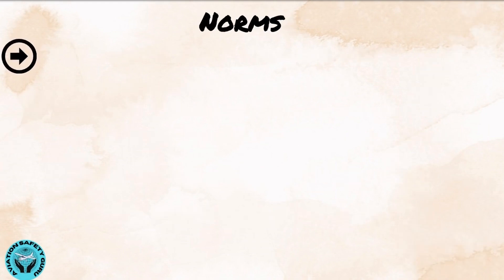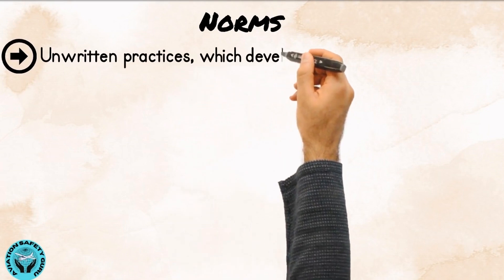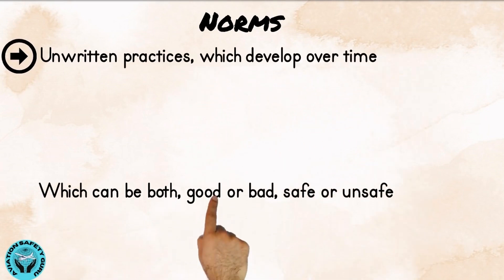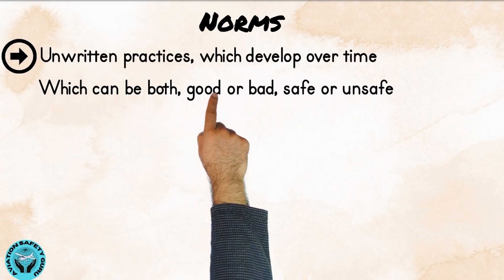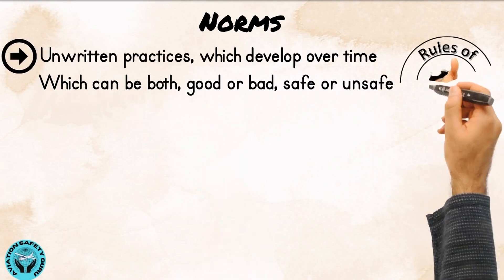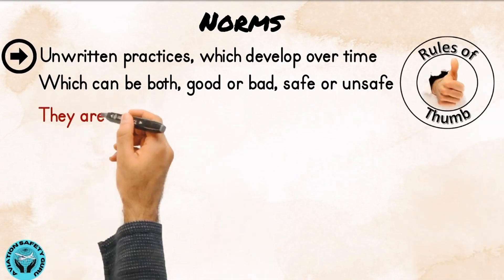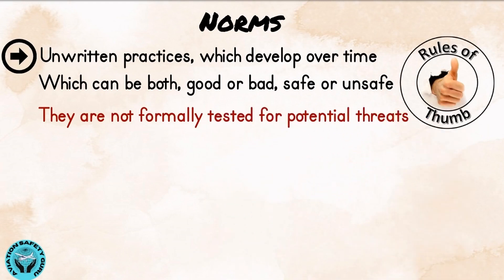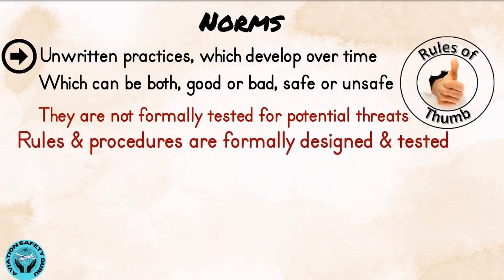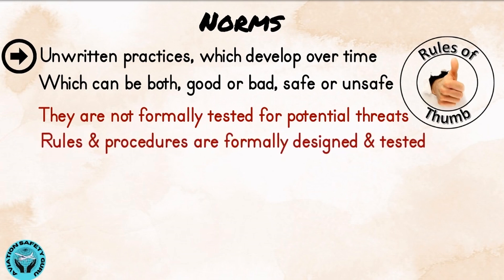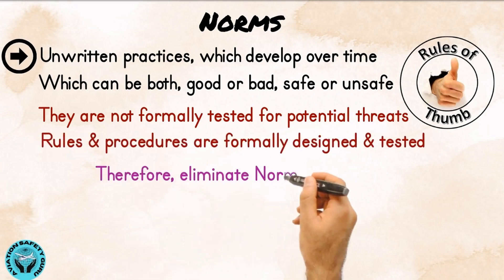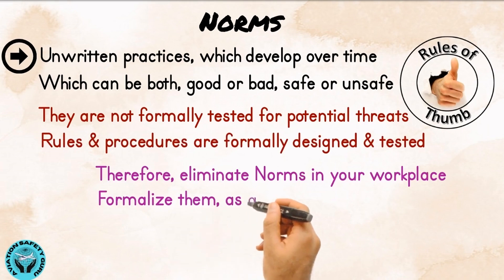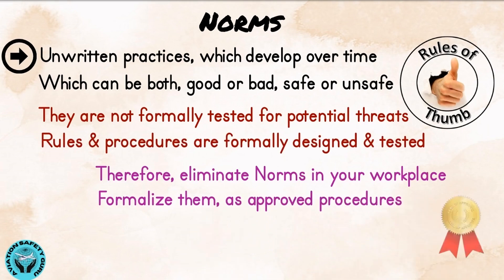Norms are unwritten practices which develop over time and can be both good or bad, safe or unsafe. These are also called rules of thumb. They are not formally tested for potential threats, whereas rules and procedures are formally designed and tested. Therefore, eliminate norms in your workplace, or formalize them as approved procedures.